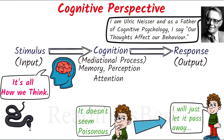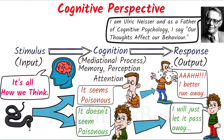If a person thinks a snake isn't poisonous or isn't too close to him, then he may act normally. But if he thinks that the snake is poisonous or is too close to him, then he may run away.